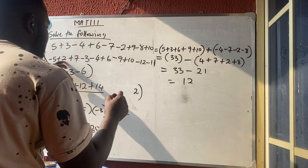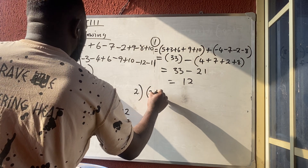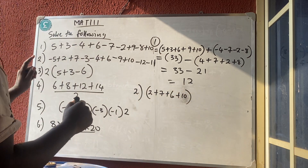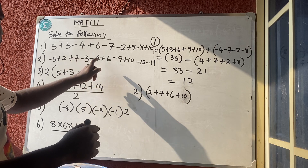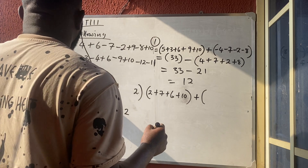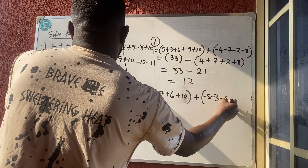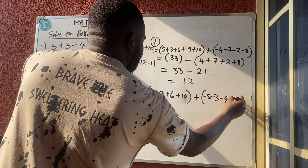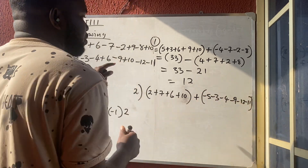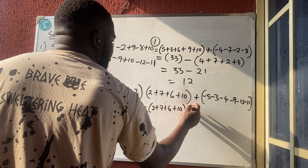Number 2: do the same thing. Bring in all the positives first: two plus seven plus six plus ten — that's four positive numbers. Then bring in all the negatives: minus five, minus three, minus four, minus nine, minus twelve, and minus eleven.